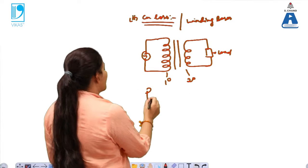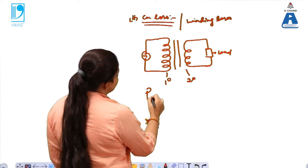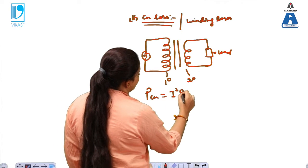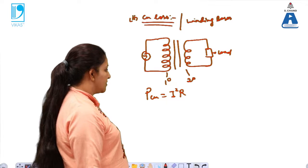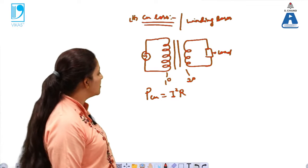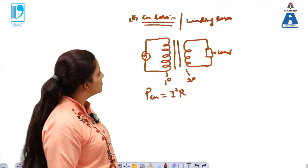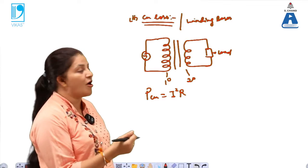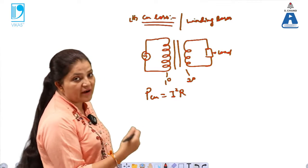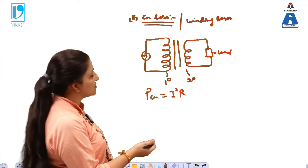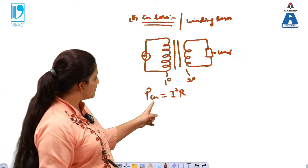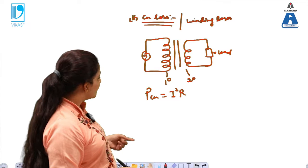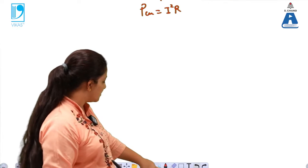The copper power loss is given by P_cu = I²R, which is the same as heat loss. The input power that is lost in the form of heat in the windings constitutes the copper losses, given by I²R.